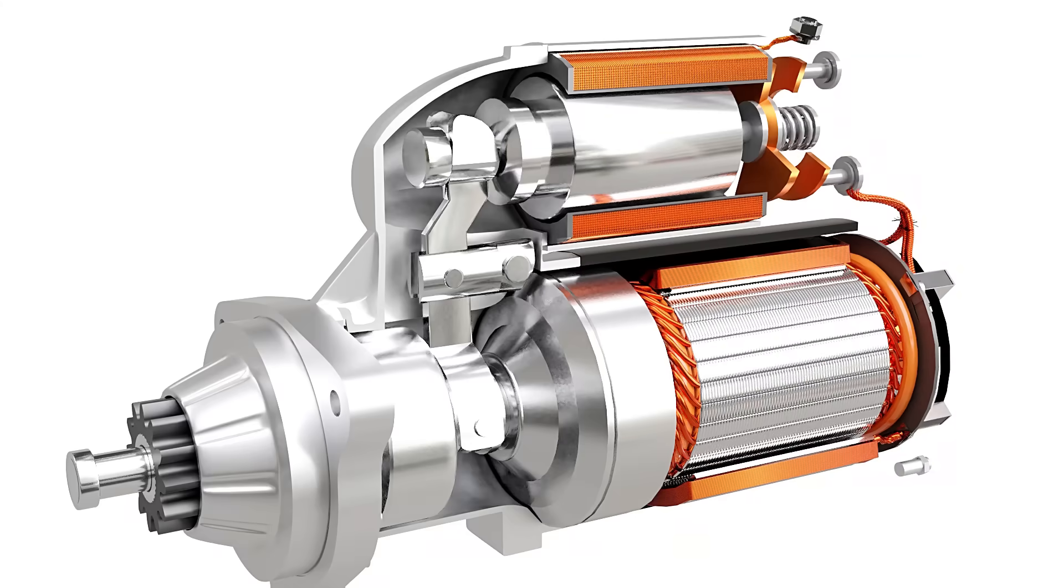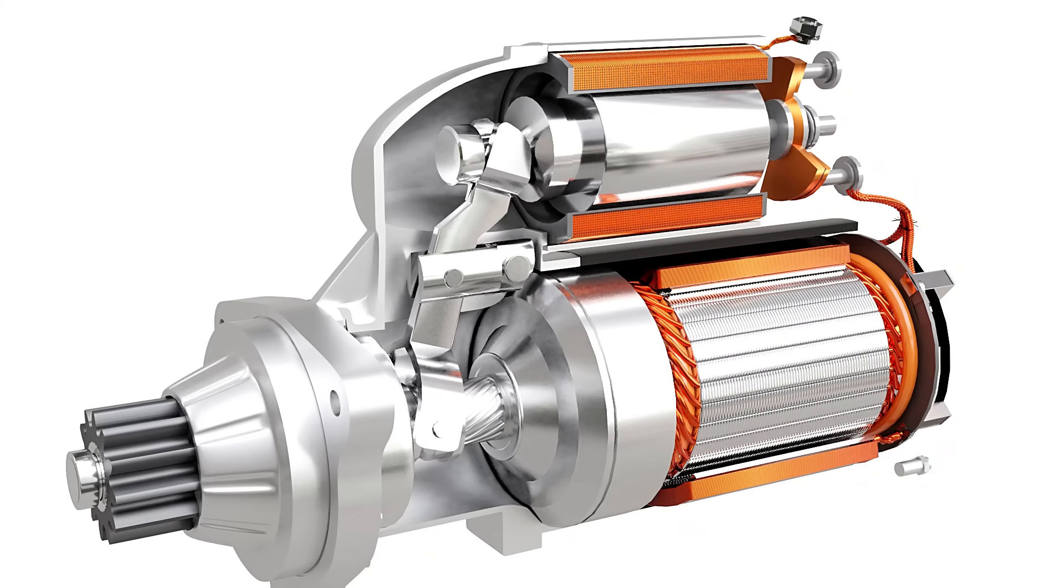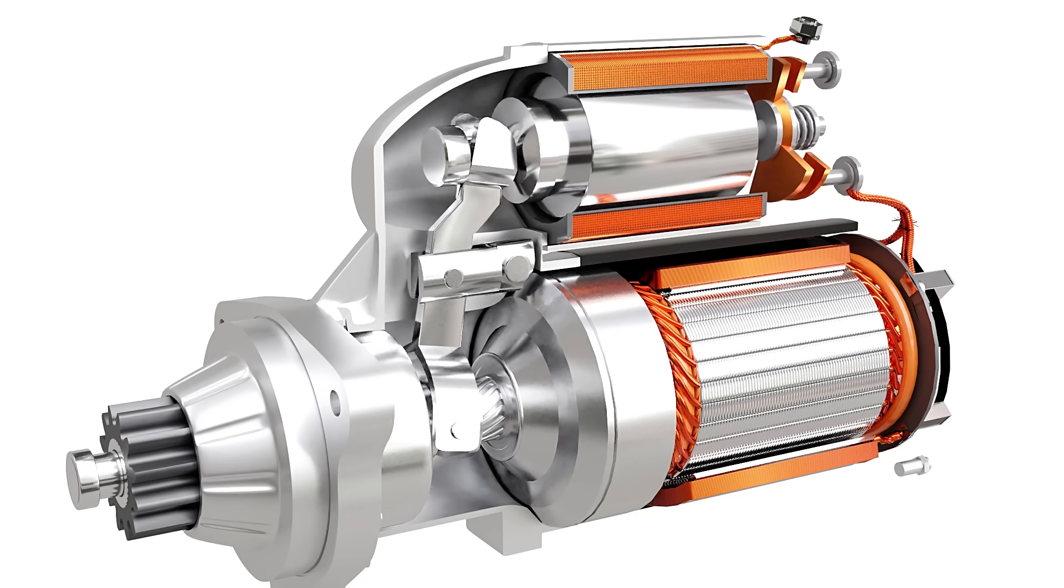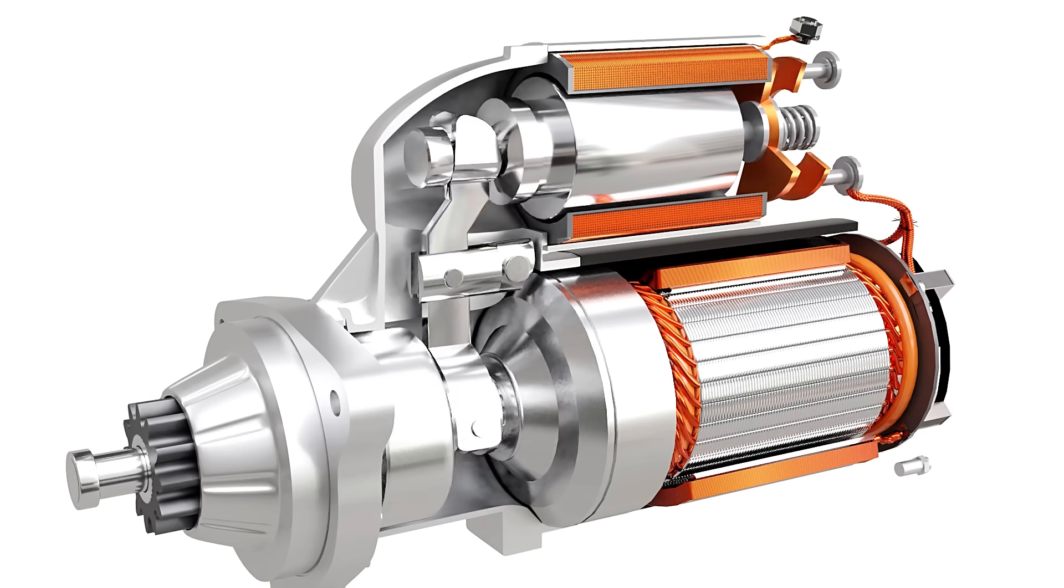The solenoid has another crucial function: it helps to slide the pinion and engage it with the flywheel before the motor starts to spin. As the pinion slides towards the flywheel, it slightly rotates on its axis as shown here.